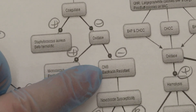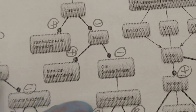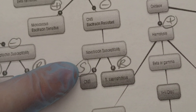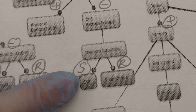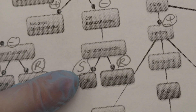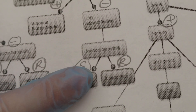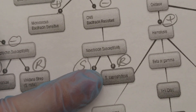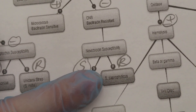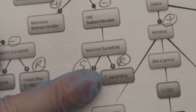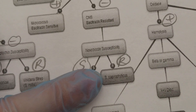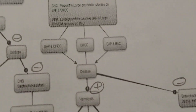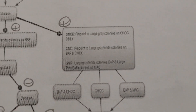For coagulase negative Staph, we look at novobiocin sensitivity. Staphylococcus epidermidis is novobiocin sensitive; Staphylococcus saprophyticus is resistant. We don't have Staph saprophyticus in our classroom, but it is a common problem in sexually active women and can also be associated with leaving tampons in too long.